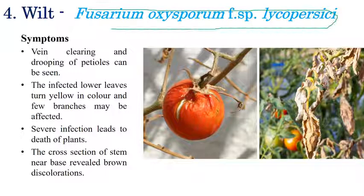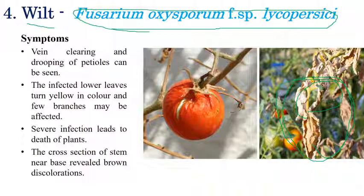The next disease is Fusarium wilt, caused by Fusarium oxysporum f. sp. lycopersici. As the name indicates, the main symptoms are wilting of leaves. Initially yellowing of leaves is observed, followed by wilting, severe scorching, and dying. Cracking and shrinking of fruits can also be seen, and in severe cases death of the plant occurs.